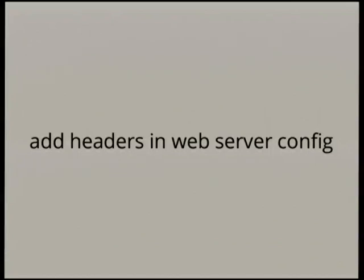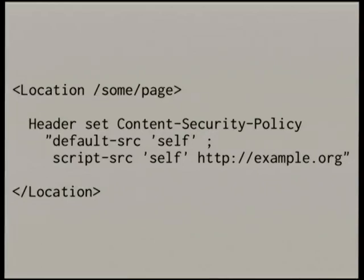Another good thing to do is add the CSP headers not in your application but directly in your web server config. The reason is that typically your Django application runs as the Django user, but the Apache config is owned by root or some other user — not the Django user. So if you put the CSP policy in your Apache config and your application gets compromised, the attacker is still limited by the Content Security Policy you have. It might not always help, but it might make it a little bit more difficult to exploit your application.